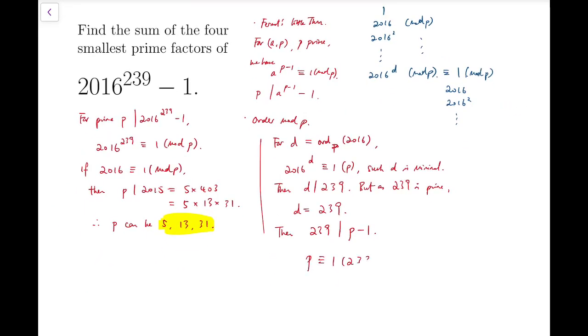And so that means p is congruent to 1 mod 239. So we need to find primes that are congruent to 1 mod 239.